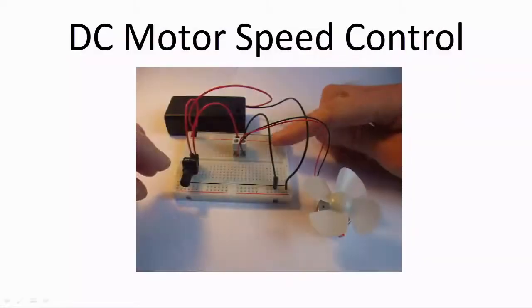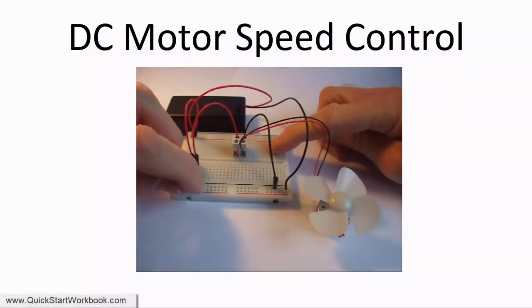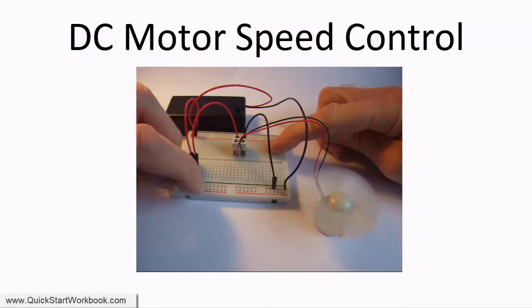Hello and welcome to Electronics for Absolute Beginners. In this video we will look at how to use a variable resistor to control the speed of a small DC motor.